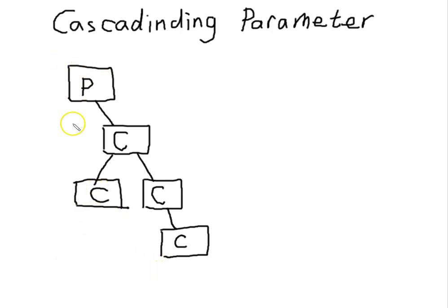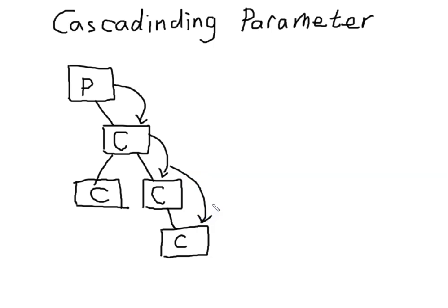If we have a component tree where the page component contains several levels of components, it makes the tree a bit complicated. If we want to pass a parameter value from the page level down to the leaf using regular parameters, we have to pass the parameters as many times as the number of levels the component tree has. Microsoft came up with a solution called cascading parameter — something you can use to cascade a value from any level downward to lower level components. You don't have to cascade one by one.